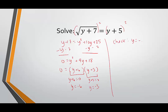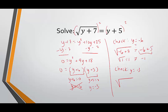Checking y equals negative 6: does the square root of negative 6 plus 7 equal negative 6 plus 5? The square root of 1 is 1, but negative 6 plus 5 is negative 1 — that didn't work. Negative 6 gets thrown out. Checking y equals negative 3: does the square root of negative 3 plus 7 equal negative 3 plus 5? Negative 3 plus 7 is 4, and the square root of 4 is 2; negative 3 plus 5 is also 2 — 2 equals 2. We have one solution: y equals negative 3. This has been a lesson on solving equations with one radical expression.